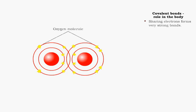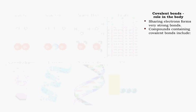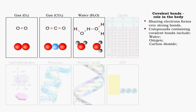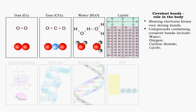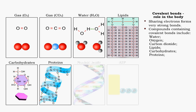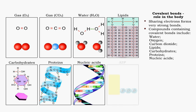Covalent bonds are strong bonds. Almost all the compounds in cells are held together by covalent bonds. These include water, oxygen and carbon dioxide gases, lipids, carbohydrates, proteins, nucleic acids, and ATP.